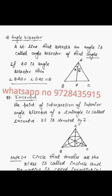Now we will move to our next type. What is the angle bisector? The angle bisector is the line from the vertex which divides the angle into two equal parts — these two angles are equal and AD is called the angle bisector. Where all three angle bisectors of a triangle meet, that point is called the incenter, usually denoted by I.